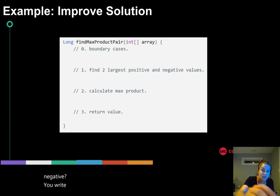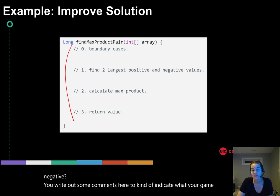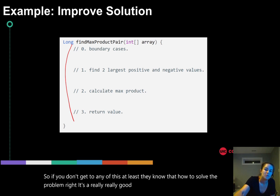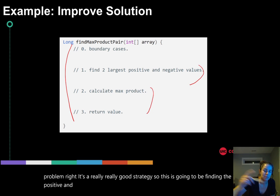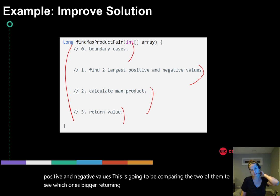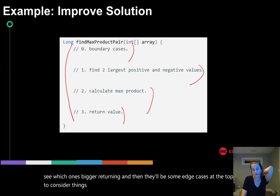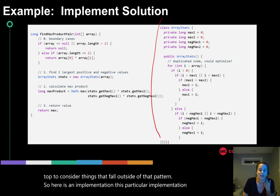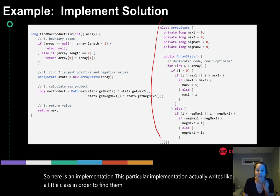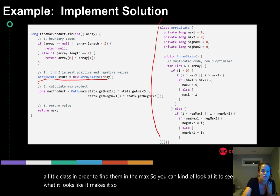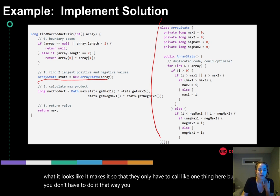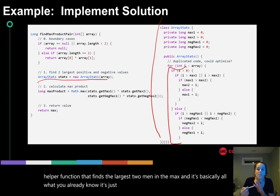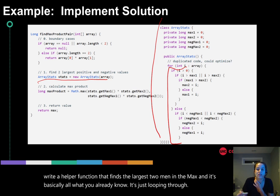Write out comments to indicate your game plan. Even if you don't finish, the interviewer knows you understand how to solve the problem. The comments outline: finding the positive and negative extreme values, comparing the two products to see which is bigger, and returning the result. Then there are some edge cases at the top to consider. The implementation uses a small class to find the min and max, though you could also write a helper function directly.